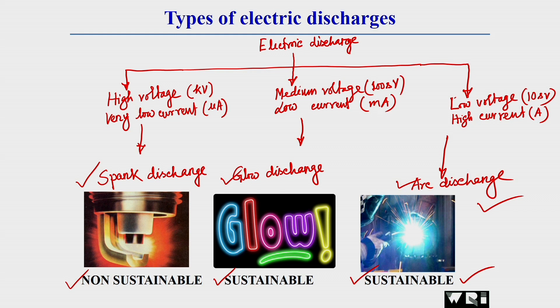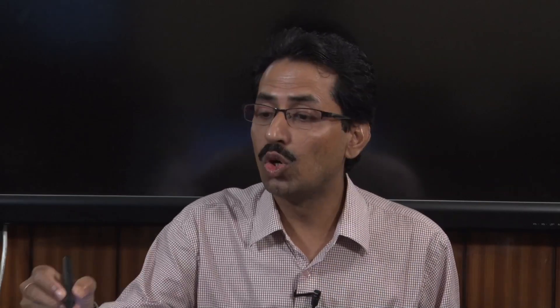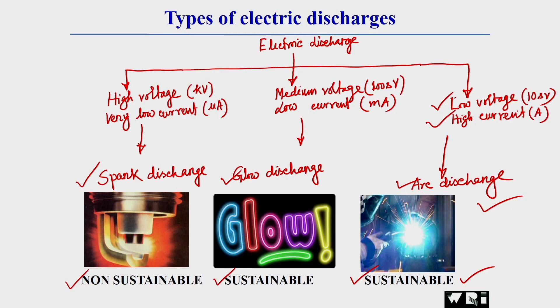Arc discharge is sustainable and used for joining metals by welding. For arc discharge, we need low voltage and high current. The electric power source is essential because domestic power supply does not provide low voltage and high current — in fact, the opposite occurs in domestic supply.